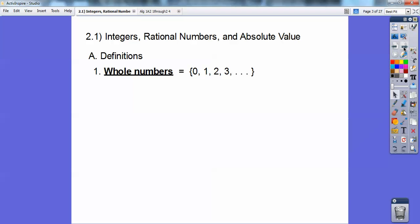So here's some definitions. Whole numbers, they start with zero and then one, two. They're just counting numbers starting at zero.